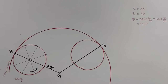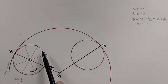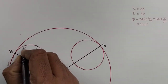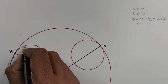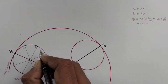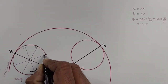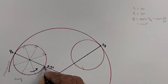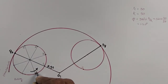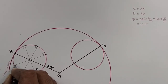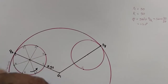For marking the other points, my rolling circle revolves in the anti-clockwise direction. So this is my first number, then the second, third, fourth, fifth, sixth, seventh, and last — eight.